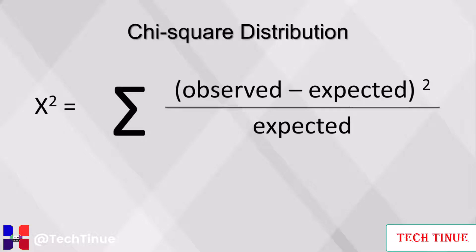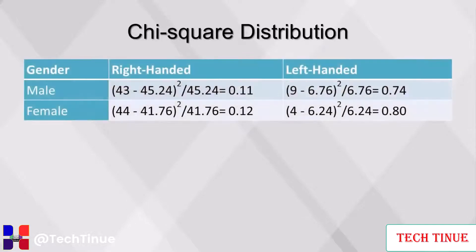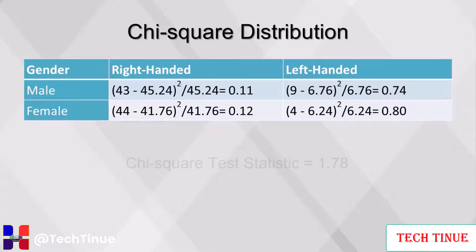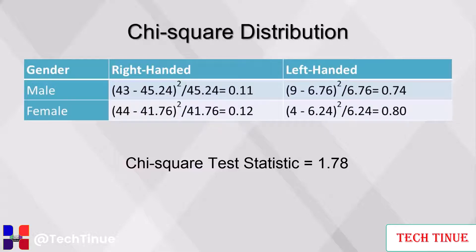If there is an association between two variables, completing the calculation for the chi-square test statistic can find which values contribute most to the association. For each cell, subtract the expected value from the observed and square the result, then divide by the expected value. Each of these results is summed (indicated by the Greek letter sigma). In this example, the calculations for left-handed people are much greater than those for right-handed people — these cells have the greatest impact on the potential association. Summing those values results in a chi-square test statistic of 1.78. Using this value in a chi-square distribution, along with the degrees of freedom and a significance level such as 0.05, is how the p-value is obtained. This concludes our video on contingency tables.